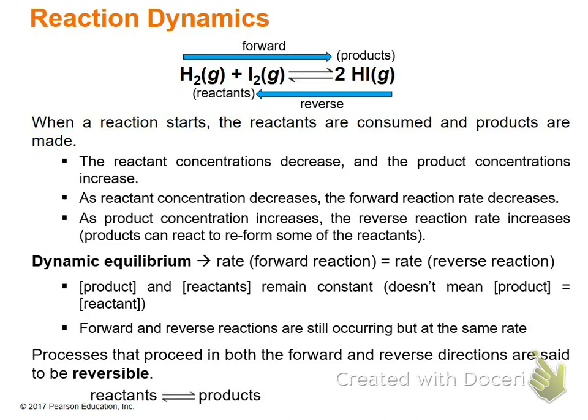There are chemical reactions that can only go in one direction. For example, ionizing hydrogen chloride in water — because hydrochloric acid is a strong acid, it only goes one direction, which is the ionization of HCl. We'll cover that in chapter 16.